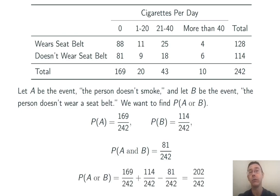Now by the addition rule, the probability of A or B is the probability of A plus the probability of B minus the probability of A and B. Doing that arithmetic, we get 202 over 242.